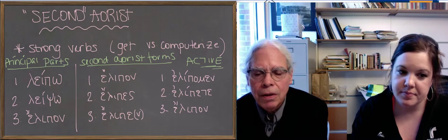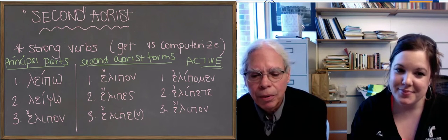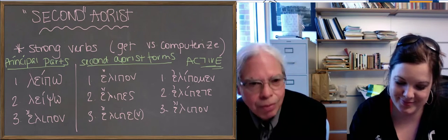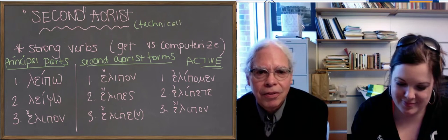But it turns out that there's an older form of the aorist, which the book calls the second aorist. Actually, historically it should be the first aorist, that's why we put scare quotes around second, it's just older.